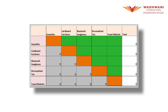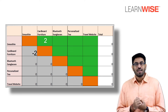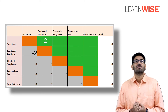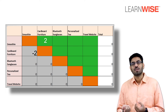So let us say I compare the smoothie idea to the cardboard furniture idea. I give it a score of two in the green box, as the smoothie idea is better than, but not dramatically better than, the cardboard furniture idea. The formula in the template automatically gives a minus two in the row belonging to the cardboard furniture, exactly the opposite of the score given, implying that it is worse than the smoothie idea.